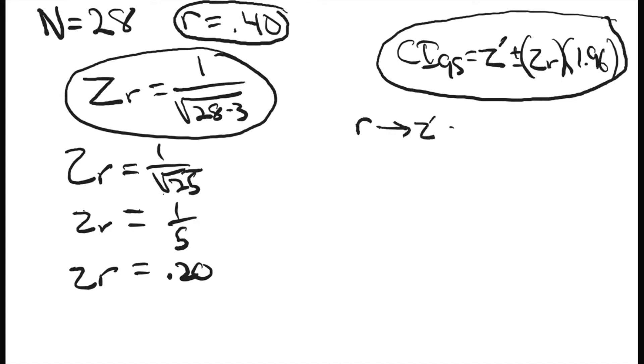We know that the conversion of r to z prime is 0.424. Now we can plug this into the formula for the confidence interval: 0.424 plus or minus the standard error that we calculated times 1.96. Now we need to do a little calculation.